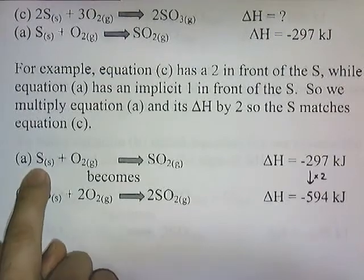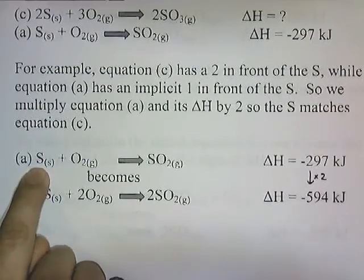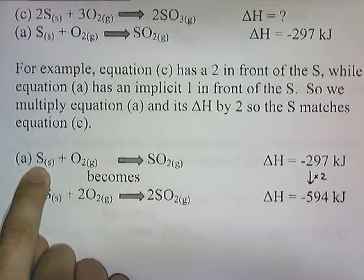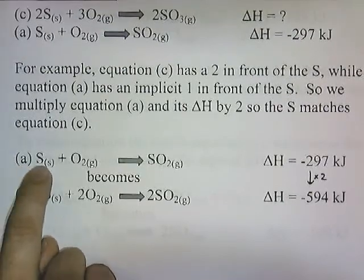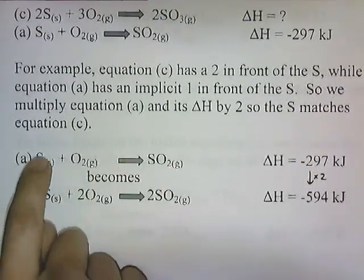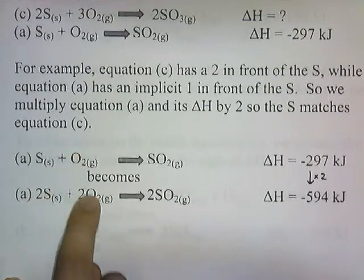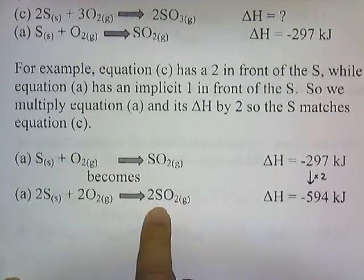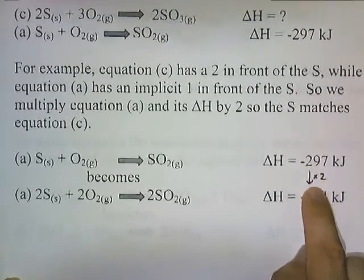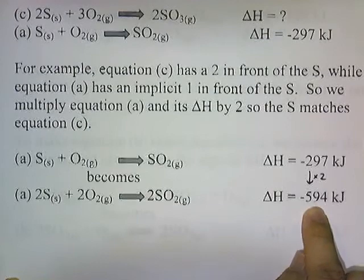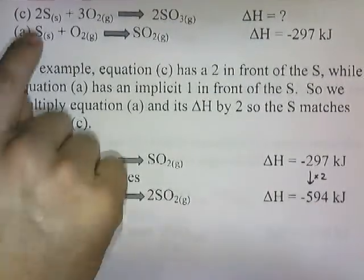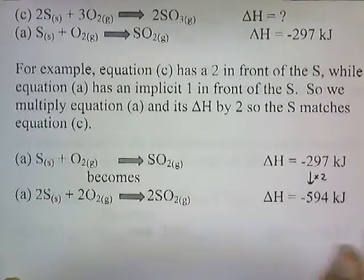Here's equation A — there's no 2 in front of the S, but there's a 2 in front of the S in equation C. So I'm going to multiply equation A by 2. Multiplying all through by 2: S becomes 2S, O2 becomes 2O2, SO2 becomes 2SO2, and negative 297 kilojoules times 2 becomes negative 594. Now modified equation A has a 2 in front of the S, which matches equation C.